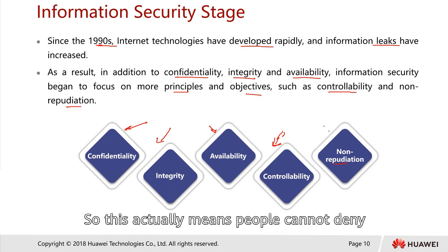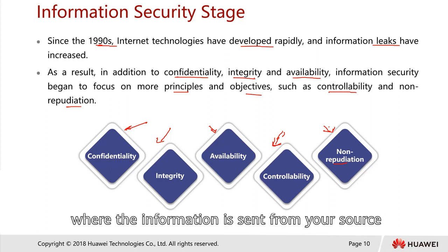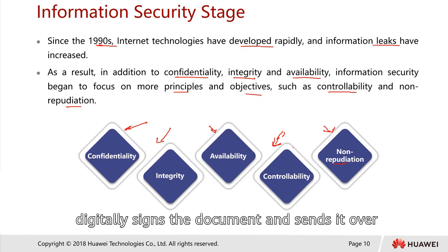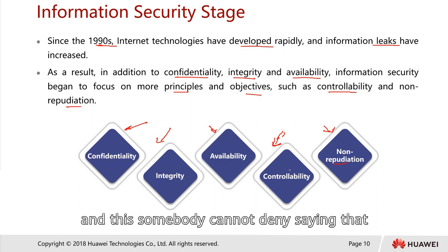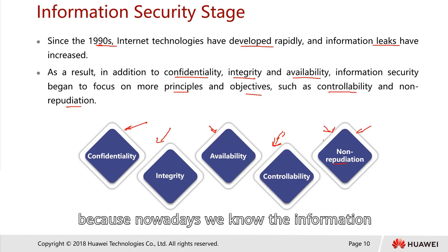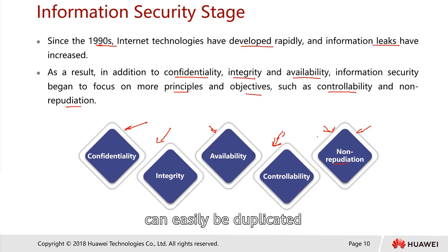Non-repudiation means that people cannot deny where the information was sent from. For example, if somebody digitally signed a document and sent it over, and there's a legal dispute, that somebody cannot deny saying it did not come from them. This is a new focus because nowadays information can easily be duplicated and somebody can just deny it.